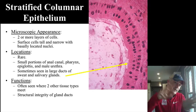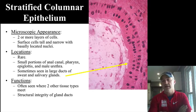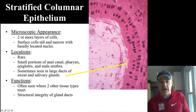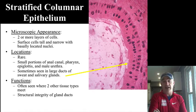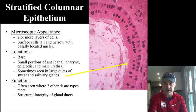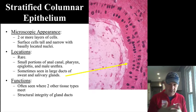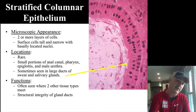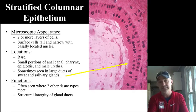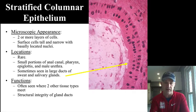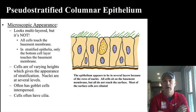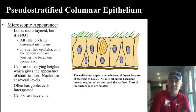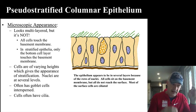Stratified columnar is the last basic classification. The bottom cells may look more cube-shaped, but the surface cells are columnar. This type is very rare — found in certain areas like the anal canal, male urethra, and epiglottis, often where different types of epithelium connect to one another. I'm not going to ask you to identify this on a slide, but I do want you to know it exists. It helps maintain structural integrity where different subtypes connect.